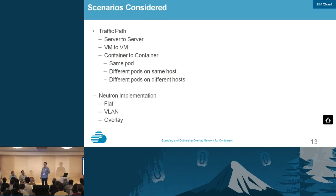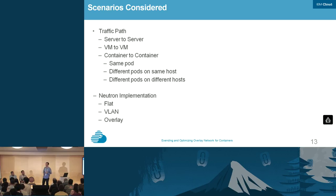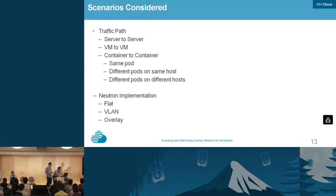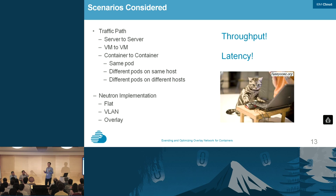The scenarios considered here have three kinds of traffic paths and three kinds of Neutron implementation. The traffic paths include server-to-server, VM-to-VM, and container-to-container. For container-to-container scenarios there are three types: containers inside the same pod, different pods on the same host, and different pods on different hosts. Please remember these two concepts — throughput and latency — they are really important. If you know these two concepts, you're almost a networking expert.